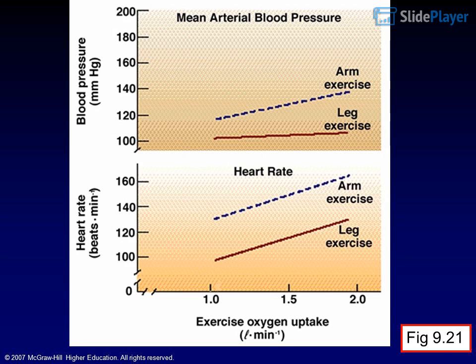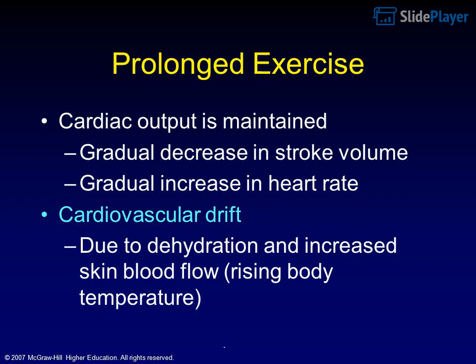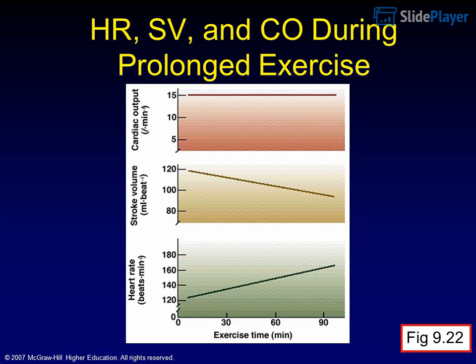Prolonged exercise: cardiac output is maintained despite a gradual decrease in stroke volume and a gradual increase in heart rate — a phenomenon called cardiovascular drift, due to dehydration and increased skin blood flow from rising body temperature. HR, stroke volume, and cardiac output during prolonged exercise are shown in Figure 9.22.